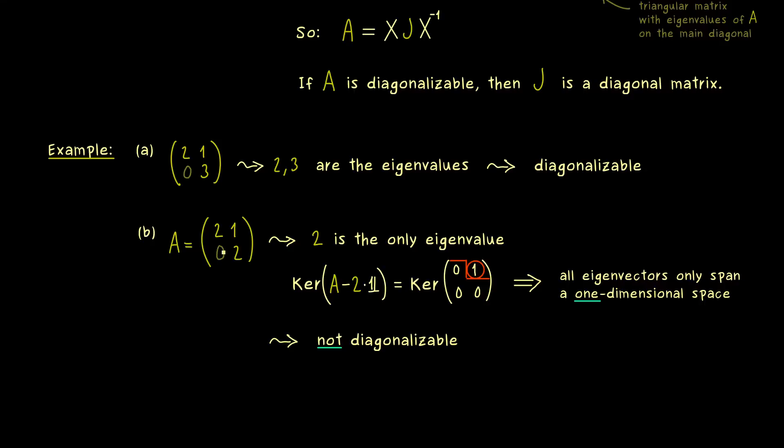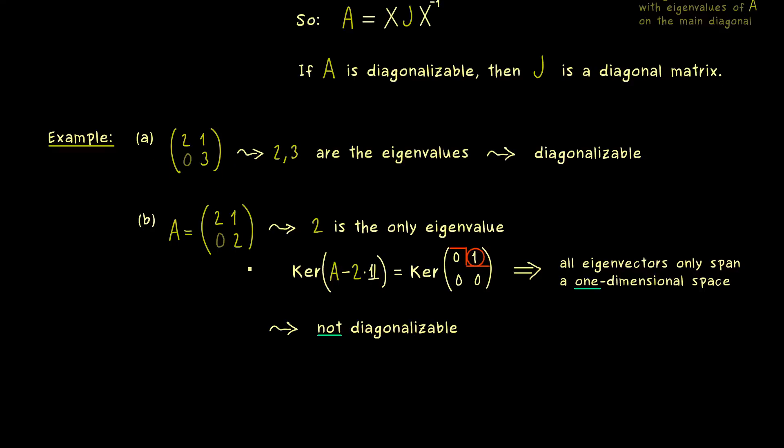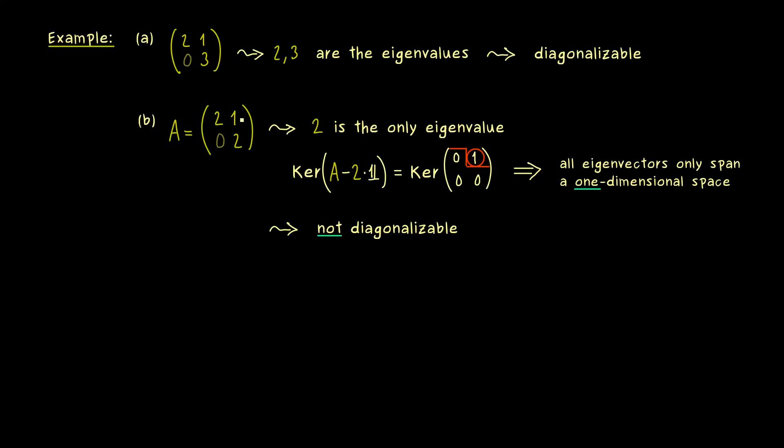This means we have the diagonal with the eigenvalues, and above the diagonal we can find 1s. And besides of that, all other entries in the matrix have to be 0.